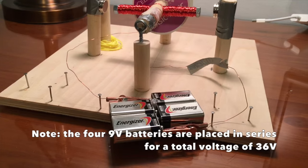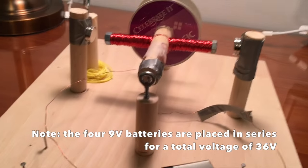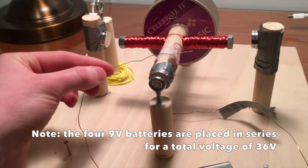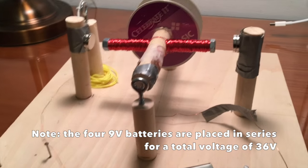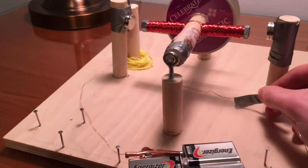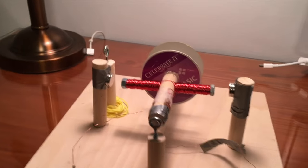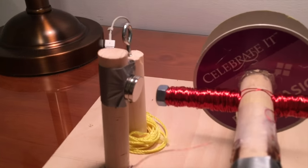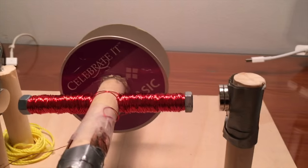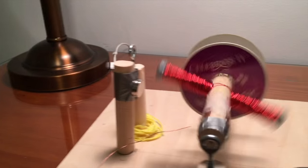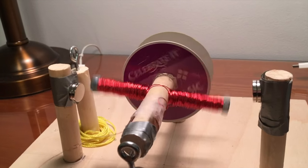Four 9 volt batteries power the motor and we place one wire above the commutator and one wire below the commutator to run it. On either side of the armature are two neodymium rare earth magnets that are extremely powerful as you can see.